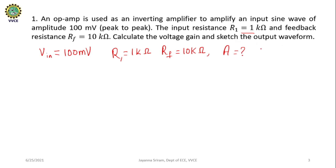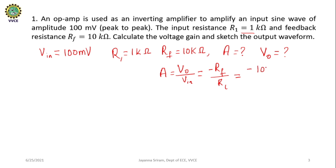In order to sketch the output waveform, we need to calculate V0. We know that the gain of an inverting amplifier A = V0 / Vin = minus Rf / R1. Substituting the given values: Rf is 10 kilo ohm and R1 is 1 kilo ohm. The 10^3 terms cancel, giving us a gain of minus 10.